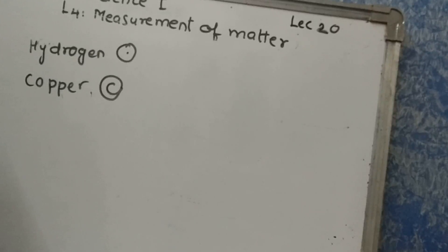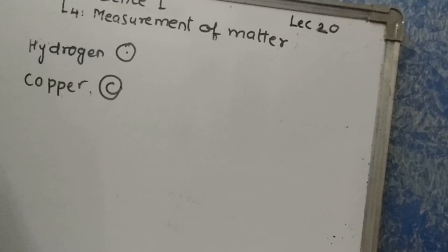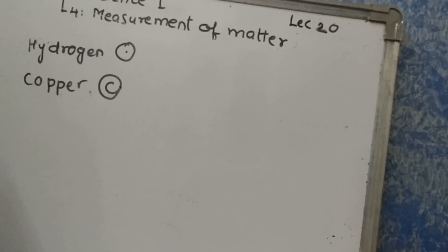According to this method, the symbol of an element is either the first letter or the first and second specific letter in its name. Of the two letters, the first is a capital letter and the second is small.